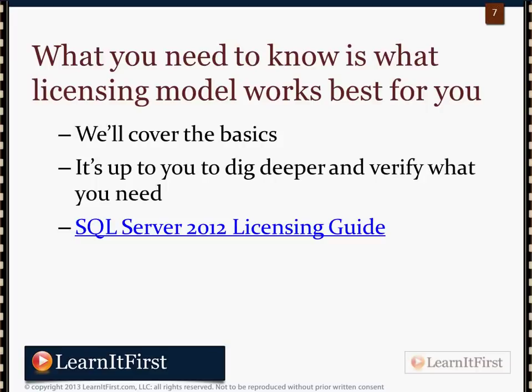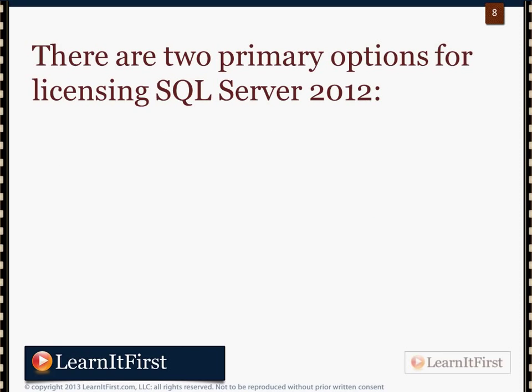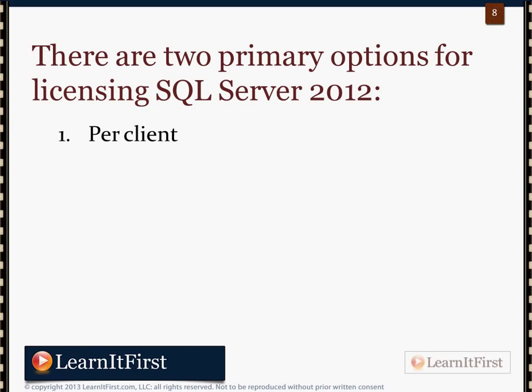There are about four or five different licensing PDFs, and it's big business — millions and millions of dollars for Microsoft. So there are two primary licensing options for SQL Server 2012. Number one is per client — the CAL model — and this is only for the business intelligence and standard editions. Number two is per CPU core, and that's only for enterprise and standard. Business intelligence does not have the CPU core licensing model.